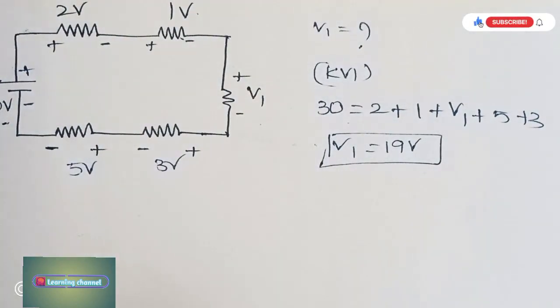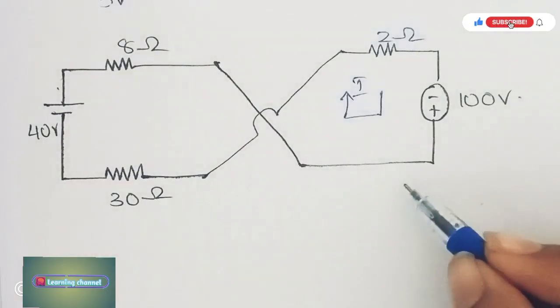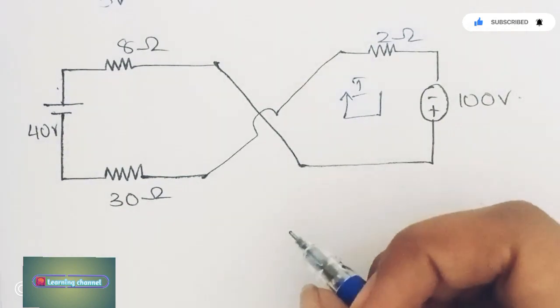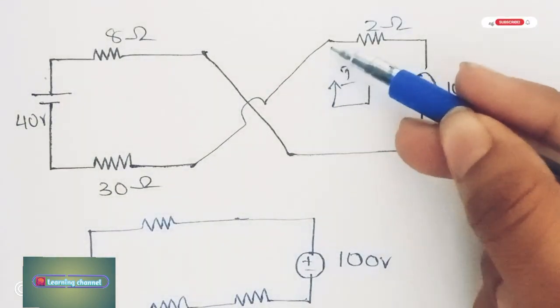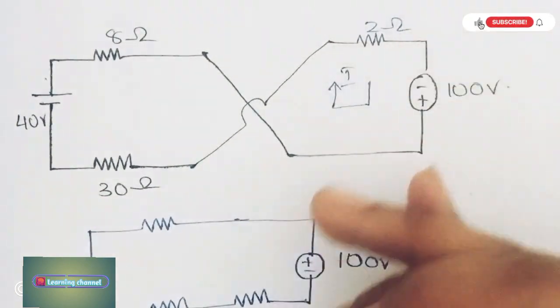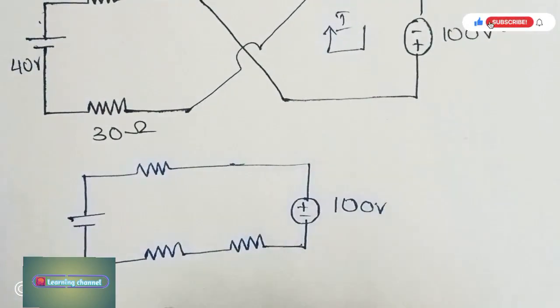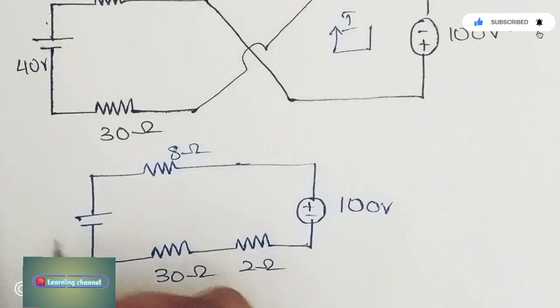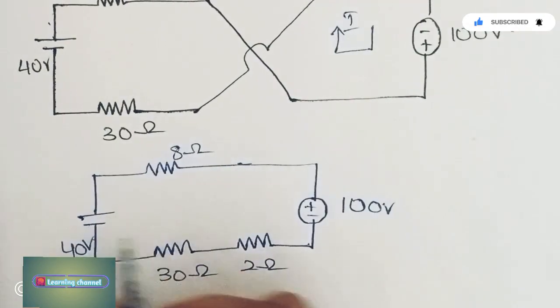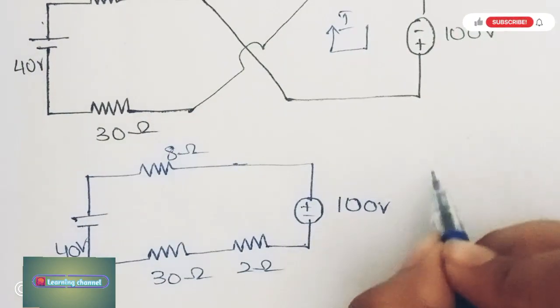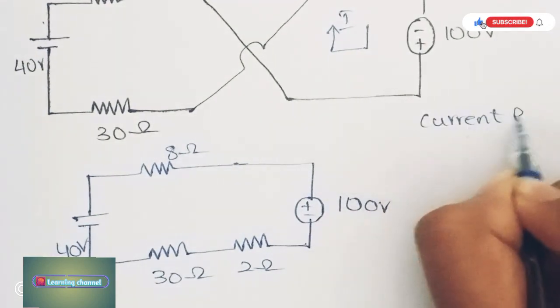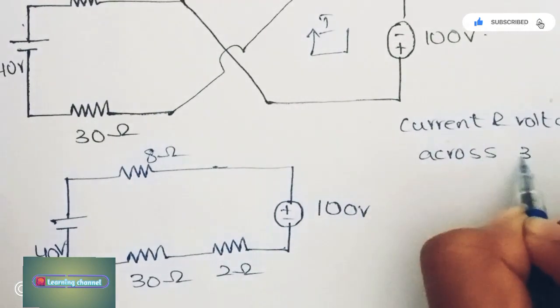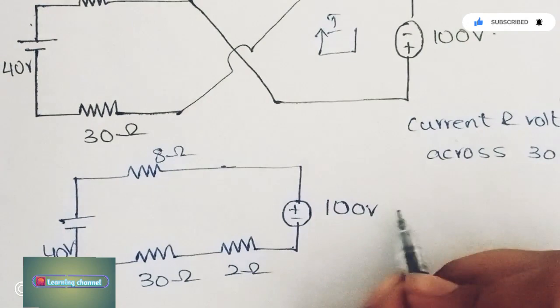Let us see one more problem on KVL. This is another circuit. It is very simple if you redraw the circuit. To redraw this, flip the circuit to this side. When we flip this, the circuit becomes like this with values 8Ω, 30Ω, 2Ω, 100V, and 40V. They are asking to find the current and voltage across 30Ω.